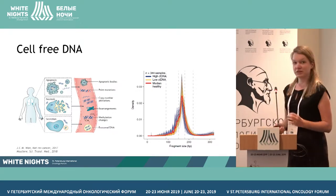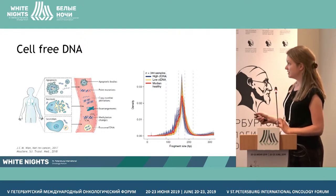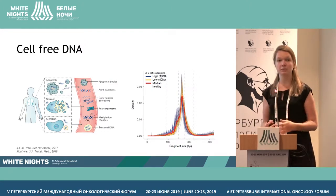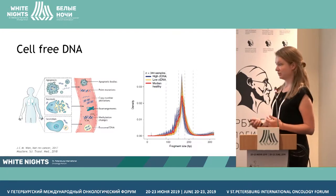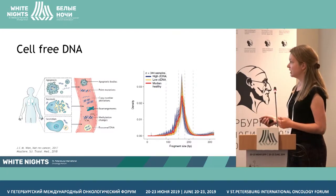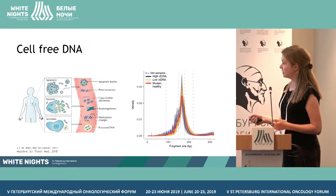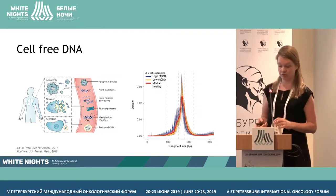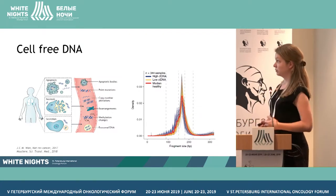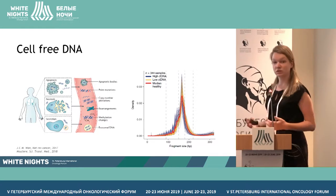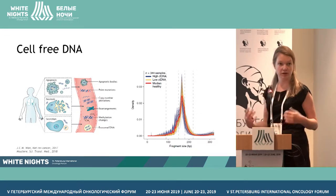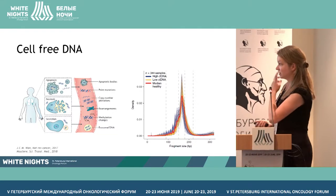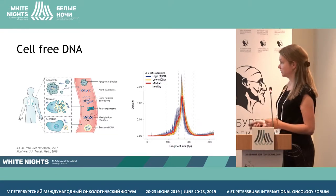Cell-free DNA is really short, fragmented DNA that is secreted by the tumor via apoptosis, necrosis, or active secretion. For tumor DNA, it's around 150 base pairs. And normal cell-free DNA, as secreted by normal cells and normal leukocytes, is 166 base pairs long.